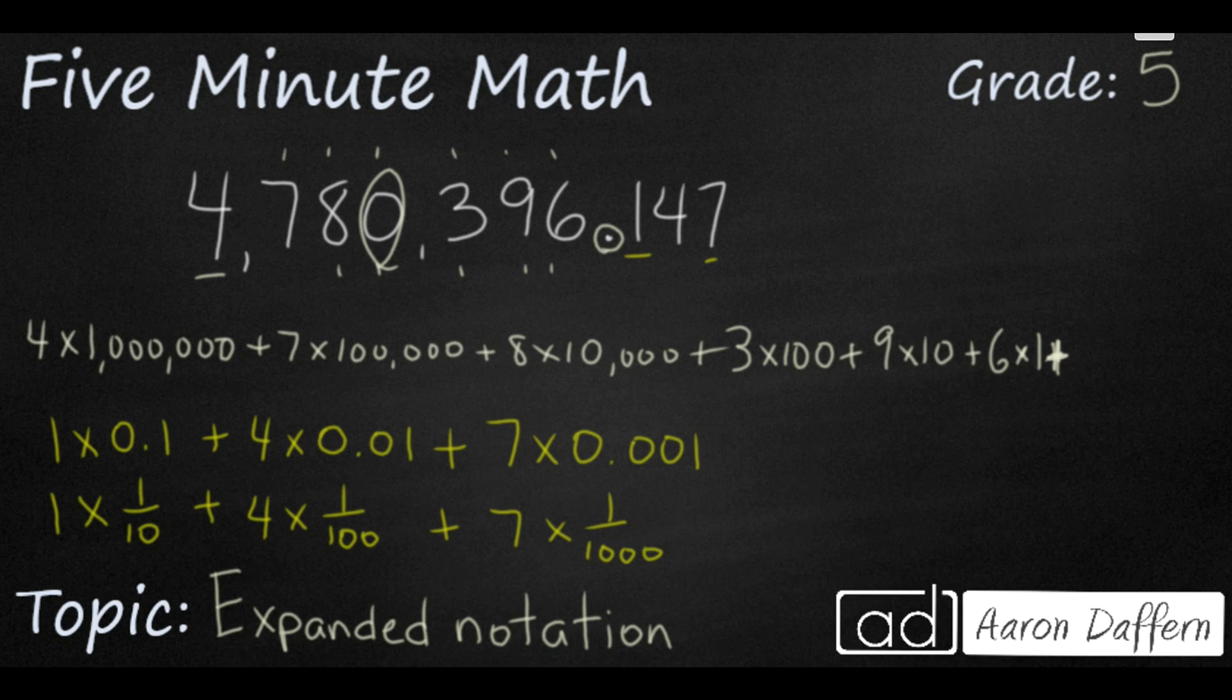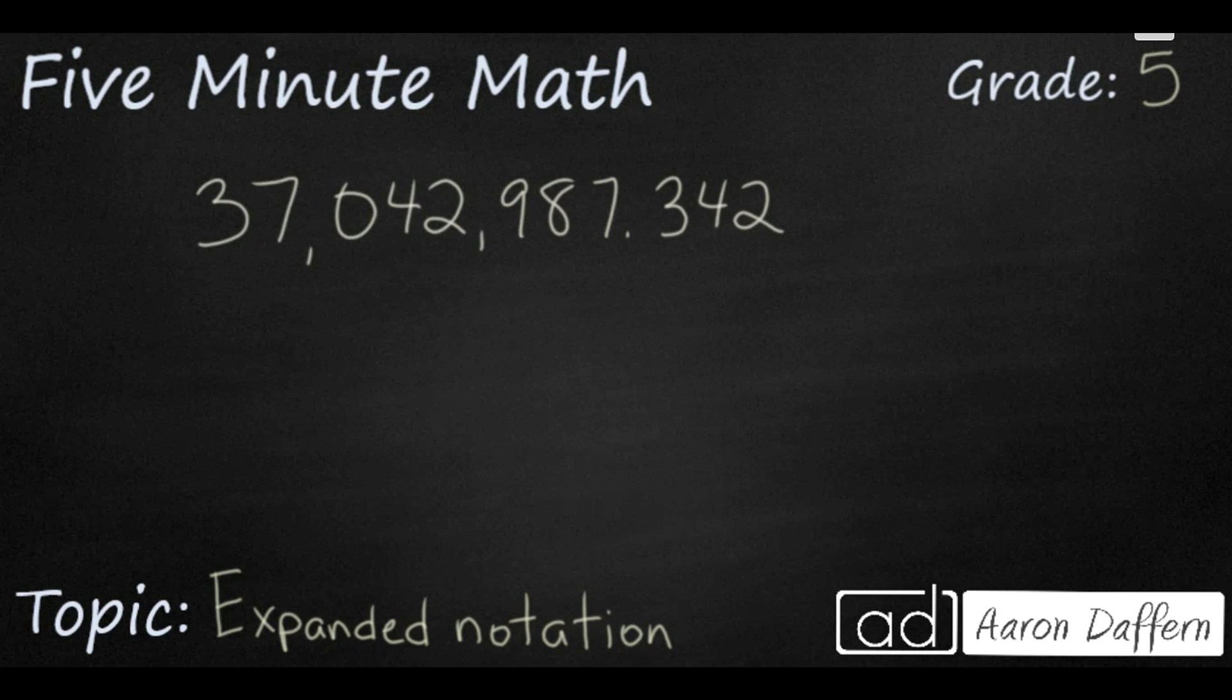Take a look at the new number that I've written on the screen. 37,042,987 and 342 thousandths. Take a moment, get out a piece of paper and a pencil, pause the video, and try to write this out in expanded notation. When you've got your answer, start the video back up.